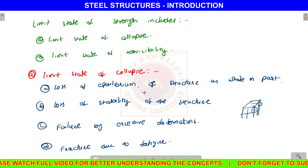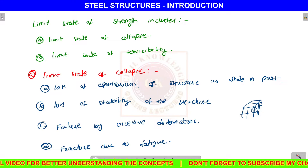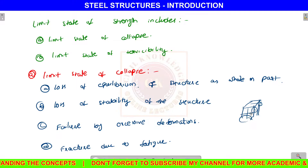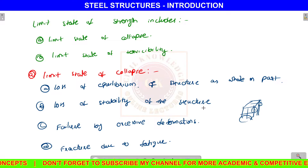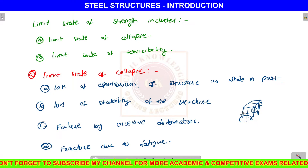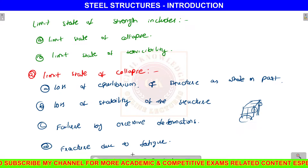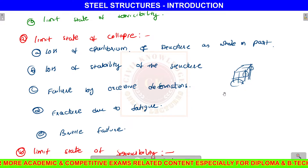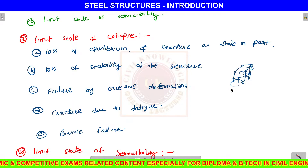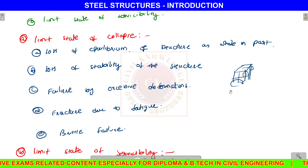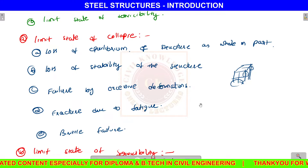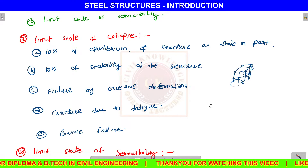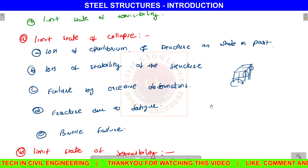The limit state of collapse includes: loss of equilibrium of the structure as a whole or part; loss of stability of the structure; and failure by excessive deformation. Deformation means loads are applied beyond limit. Excessive deformation is a roughness condition. Next is fracture due to fatigue — fatigue means repetitively applied load. If a member fails under fatigue, that is not a brittle failure. So we must consider the limit state of collapse.